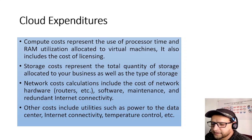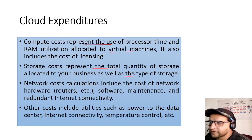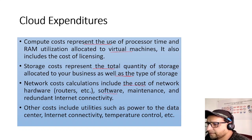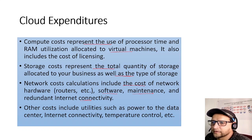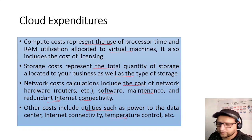Cloud expenditure categories: Compute cost represents processor time and RAM utilization allocated to virtual machines, including licensing. Storage cost represents the total storage allocated to your business and the type of storage at the backend — HDD or SSD. Network cost includes storage network hardware like routers, software, maintenance, and redundant internet connectivity. Other costs include power, cooling, and temperature control for the data center.